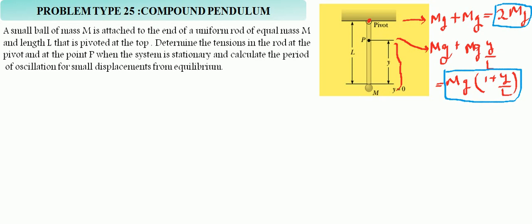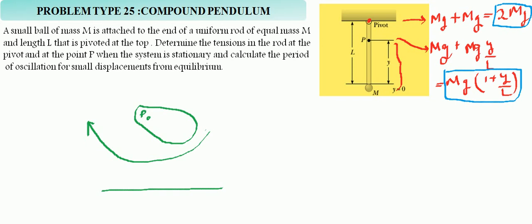Now we find the period of oscillation. A compound pendulum is a rigid mass fixed to an axle. Consider the axle as the fixed point and point P below it. This object will undergo simple harmonic oscillation. The key thing to notice is that the entire mass is concentrated at the center of mass — so imagine a massless thread connected at the center of mass, which is at distance d from the fixed point.